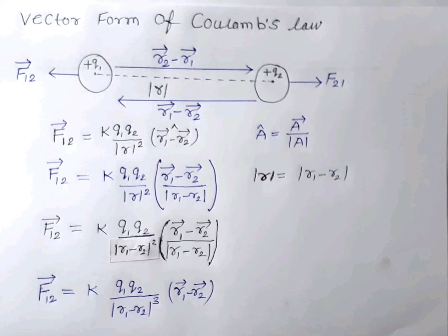So F12 vector can be written as: F12 = k·q1·q2 / |r1 − r2|² × (r1 − r2) / |r1 − r2|, where |r| = |r1 − r2|.